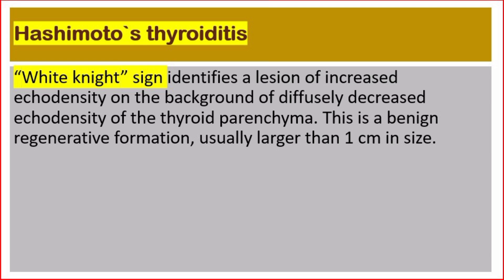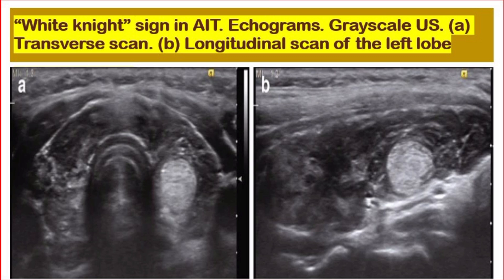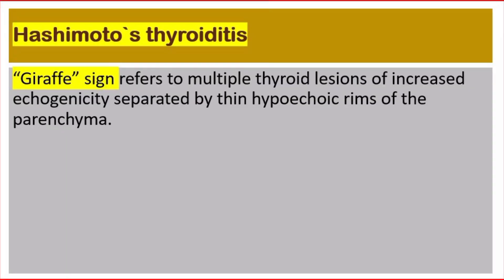Autoimmune thyroiditis gray scale ultrasound shows (a) Swiss cheese sign on longitudinal scan and (b) cleft sign on transverse scan. The white knight sign identifies a lesion of increased echo density on the background of diffusely decreased echo density of the thyroid parenchyma. This is a benign regenerative formation usually larger than one centimeter in size. The graph sign refers to multiple thyroid lesions of increased echogenicity separated by thin hypoechoic areas of parenchyma.